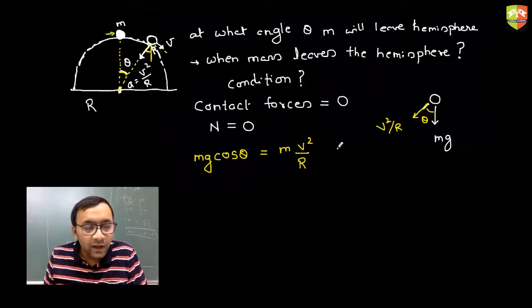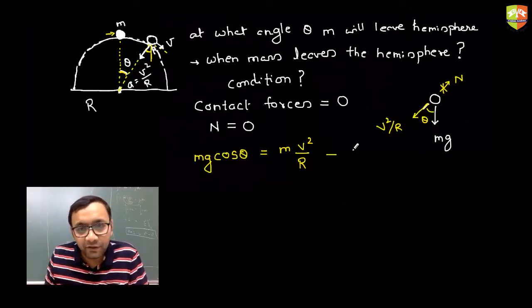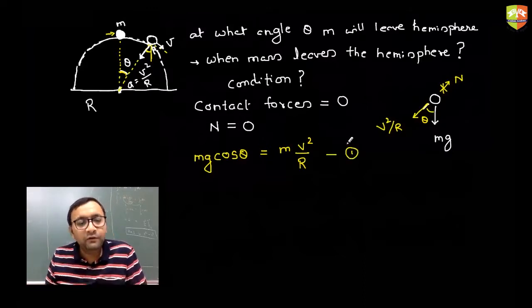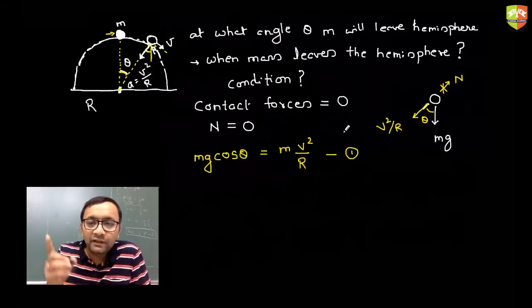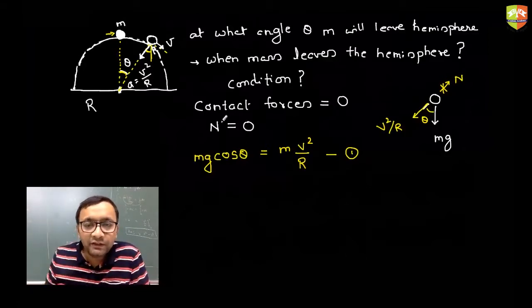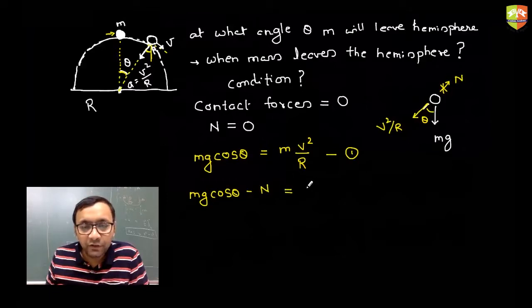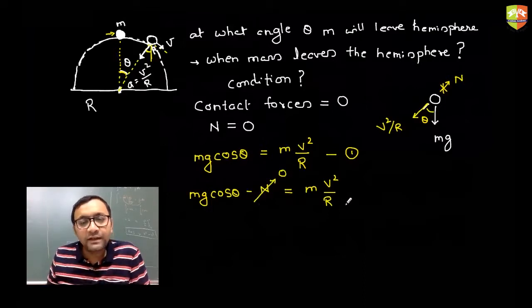I am ignoring the normal reaction since it goes to zero when it leaves the surface. So this force mg cosθ should equal m times the centripetal acceleration, giving mg cosθ = mv²/r. If it is not leaving the surface, the equation would be mg cosθ minus the normal reaction equals mv²/r, but at the leaving point, normal force is zero.